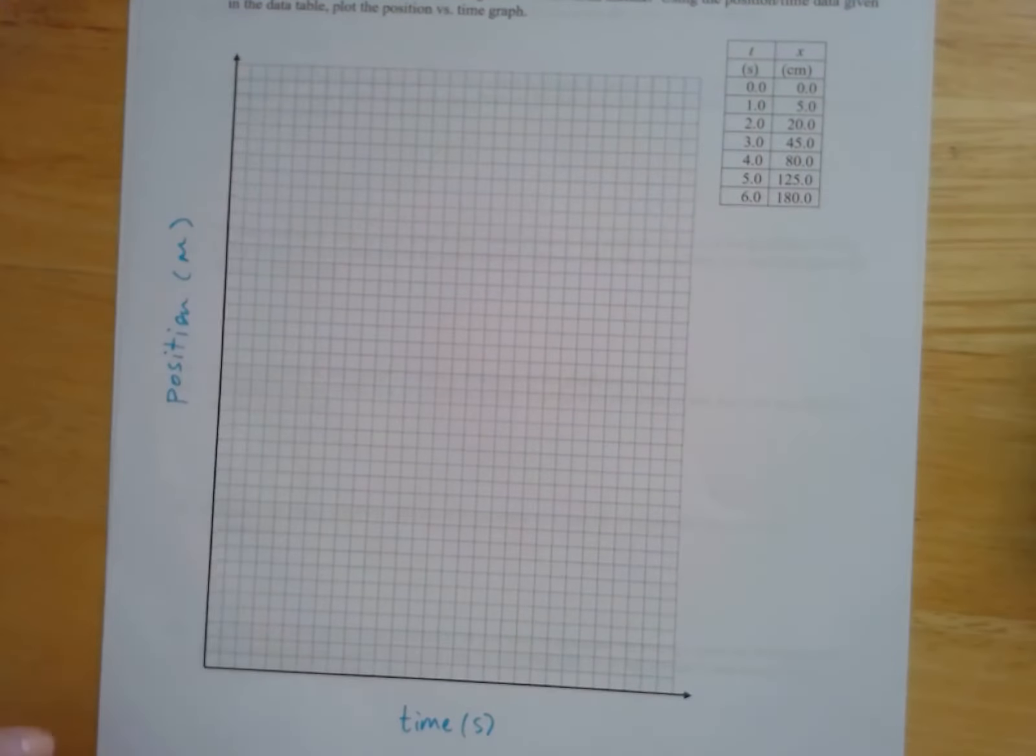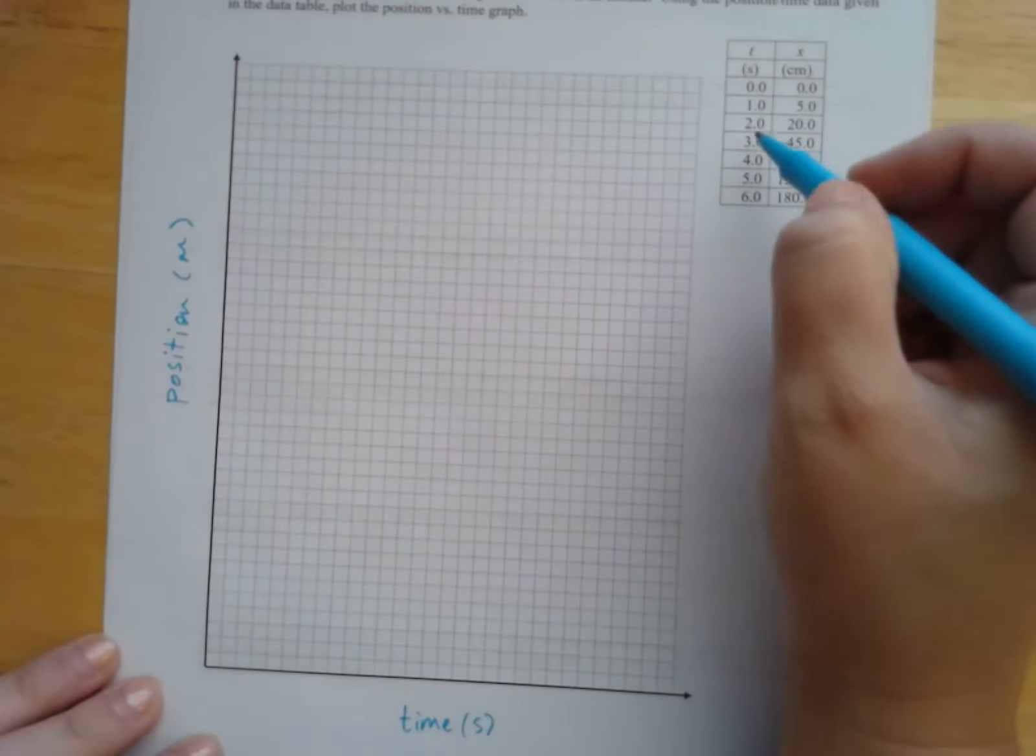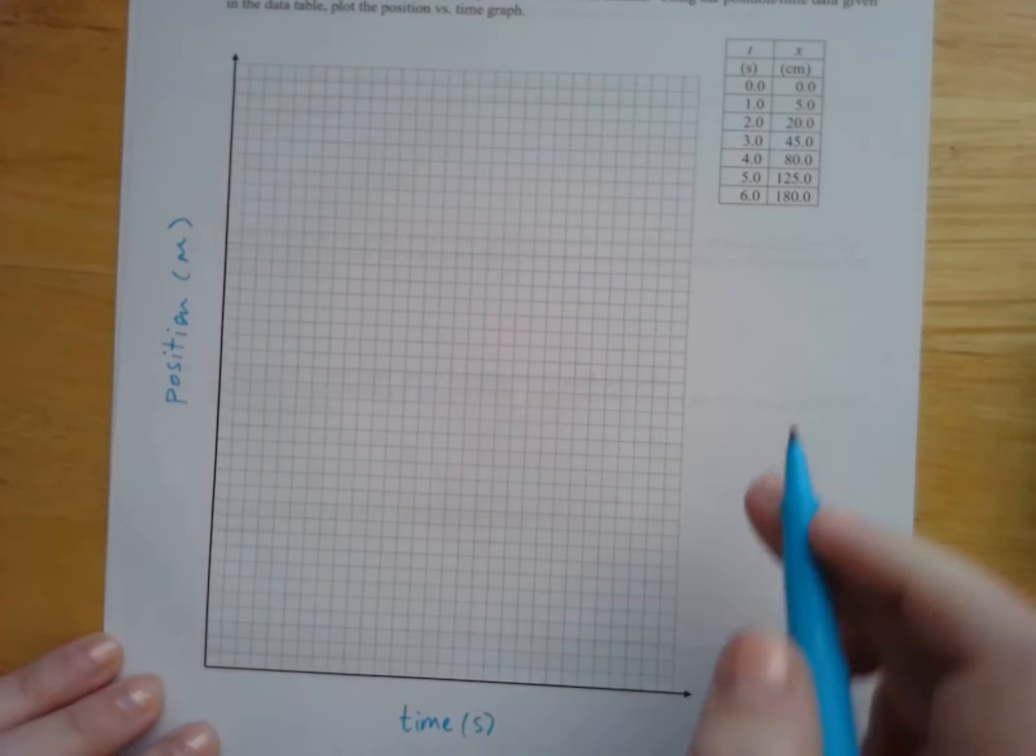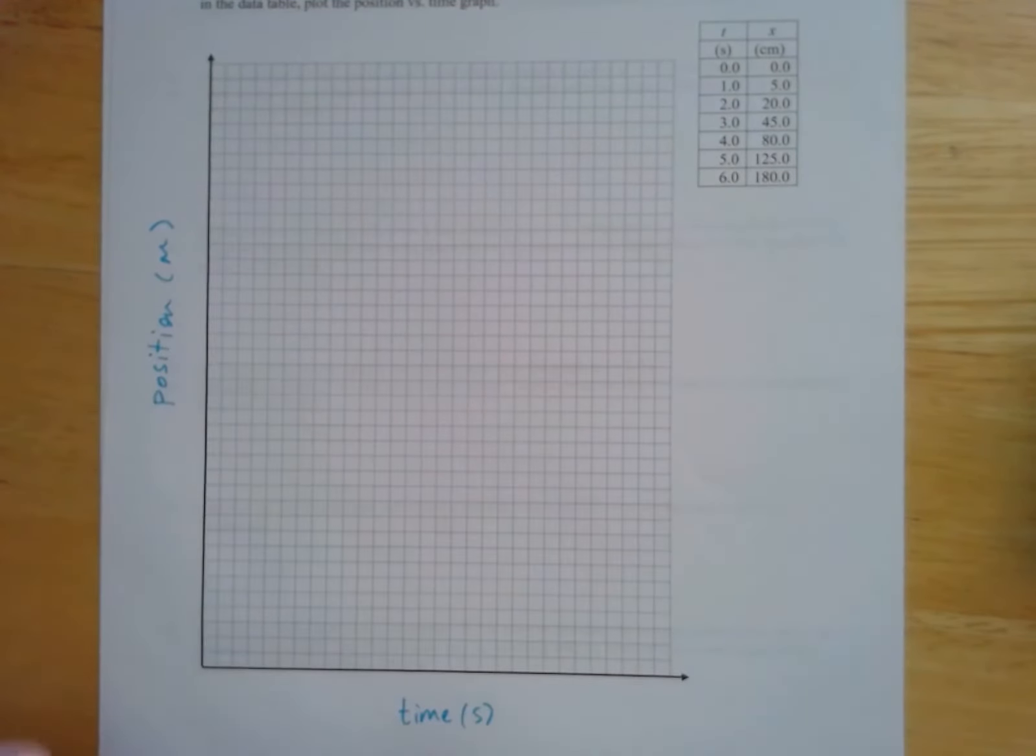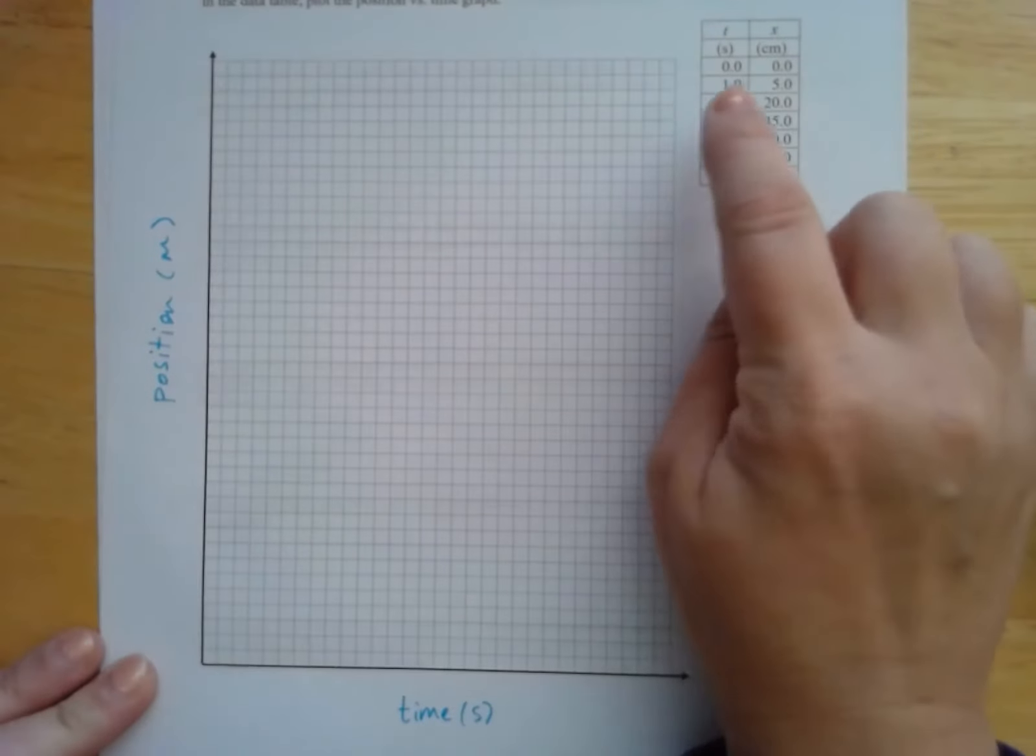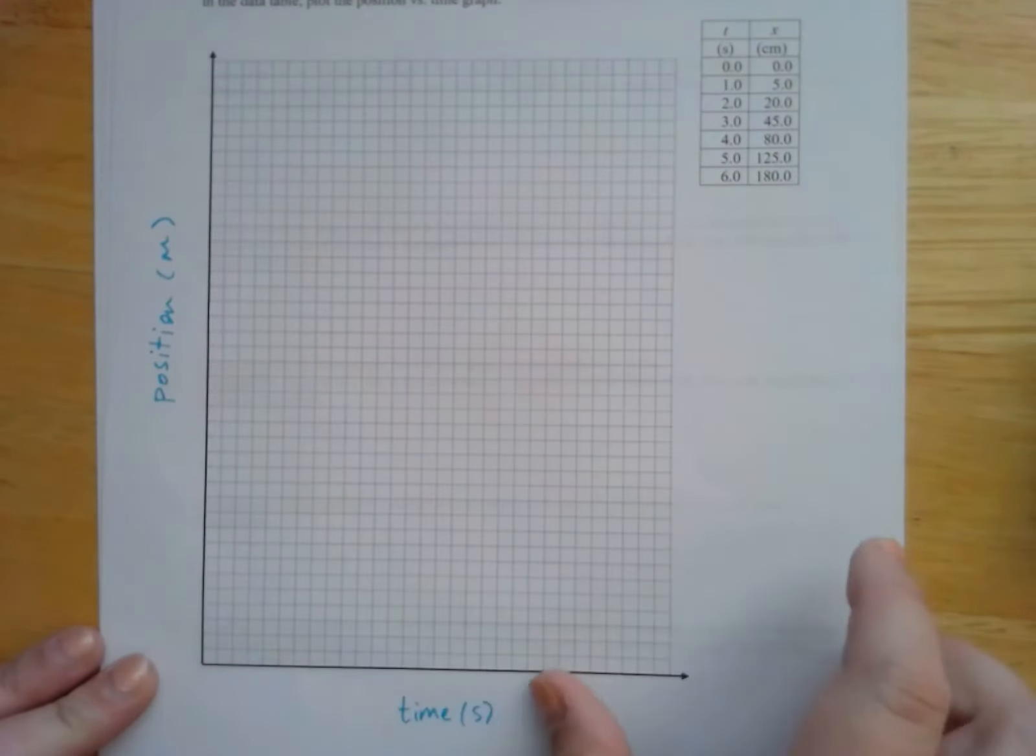So what I would do is I would count all these blocks and then figure out how to get all the six seconds as spread out as possible. So count them up, actually divide it by six, and then use that to figure out how far they should go. Once you've got your graph, you've got a table and a graph that represent the same data.